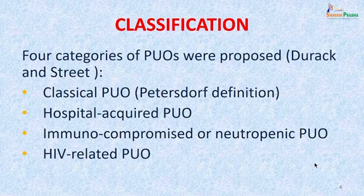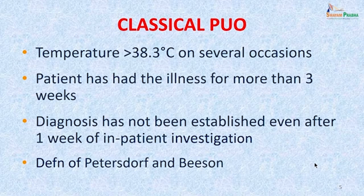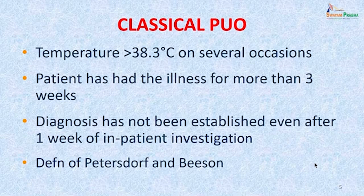The classification was later proposed by Durack and Street, essentially after HIV came on the scenario and also presented sometimes as PUO. They divided PUO into 4 classes: the classical PUO as referred to in the Peters-Dorf definition — temperature more than 38.3 degrees centigrade, illness more than 3 weeks, diagnosis not established after one week of investigation; hospital-acquired PUO; immunocompromised or neutropenic PUO; and HIV-related PUO.